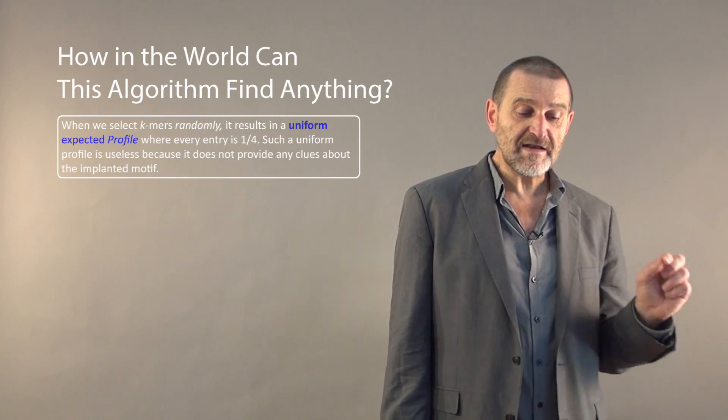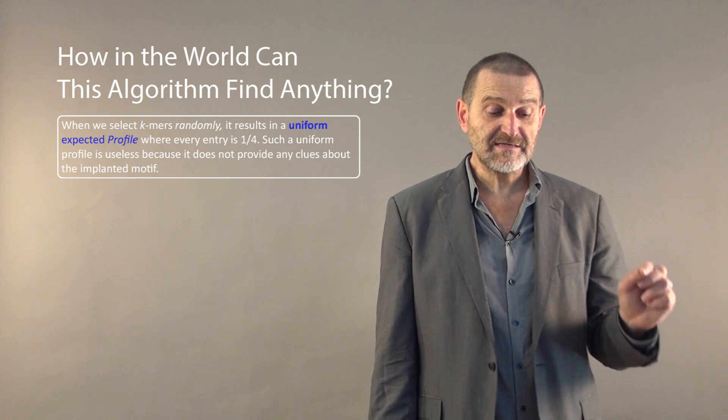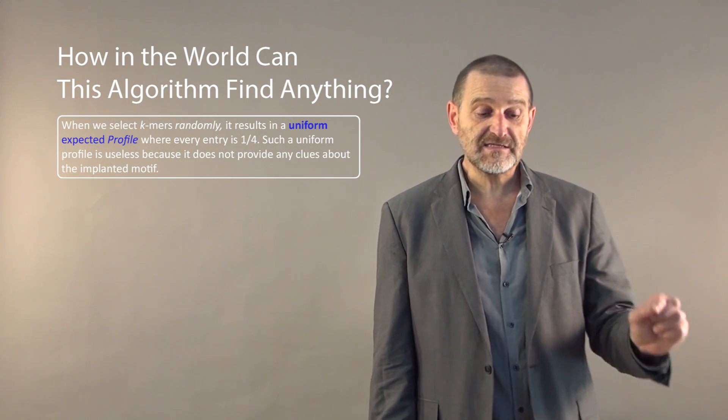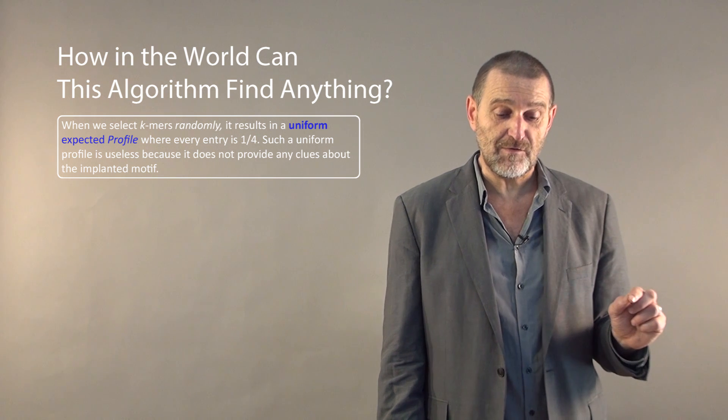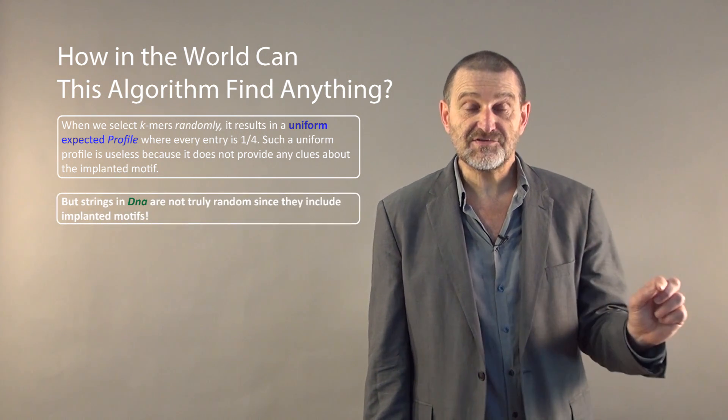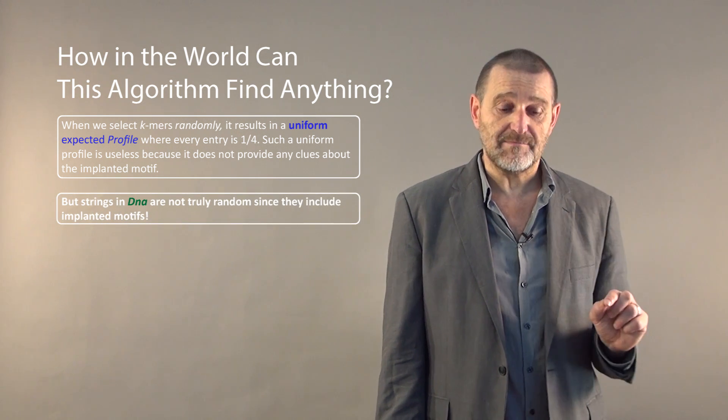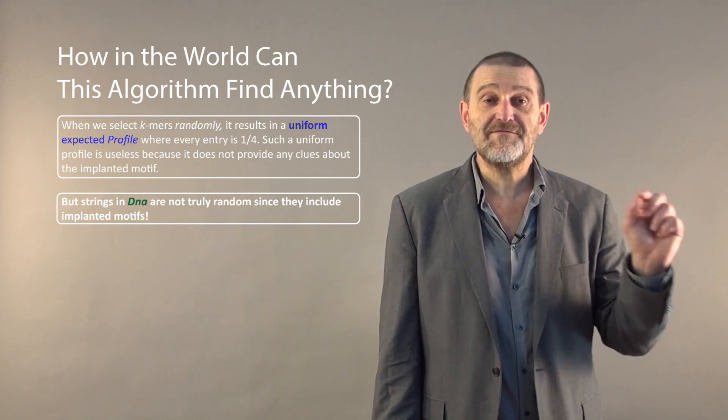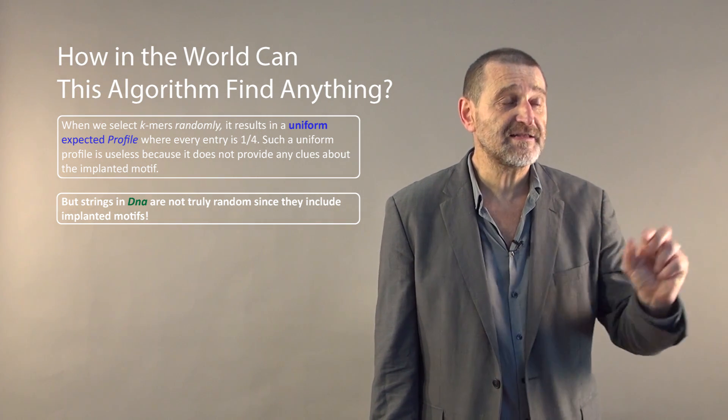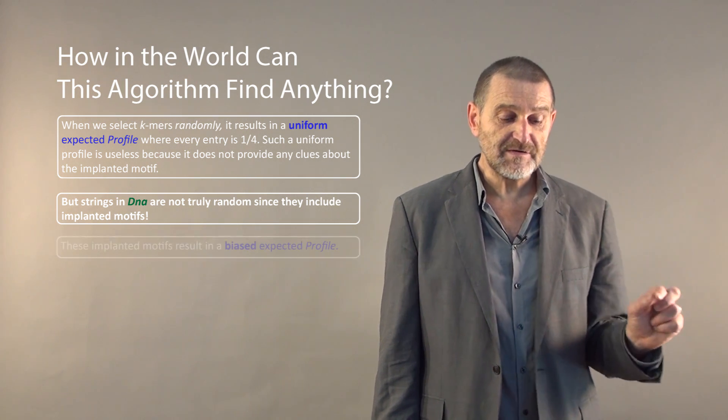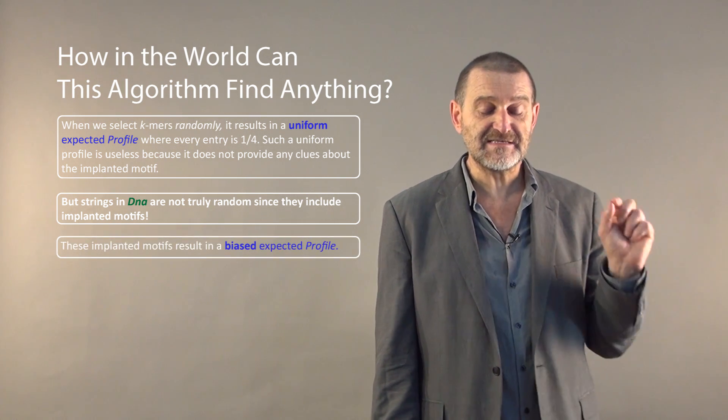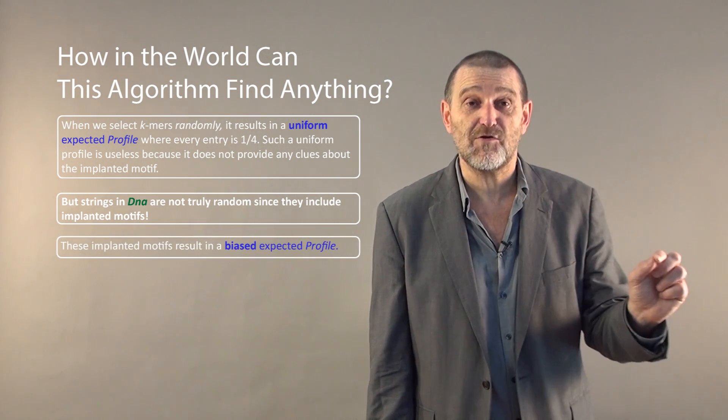So let's try to think about this. When we form k-mers randomly, it results in a uniform expected profile as we discussed before. But strings in DNA are not random because we have inserted implanted patterns in our DNA.